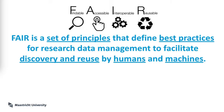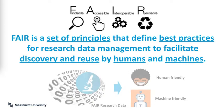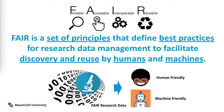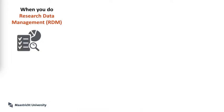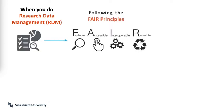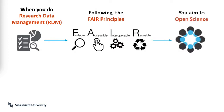But what is actually FAIR? Well, FAIR is a set of principles that define best practices for research data management to facilitate discovery and reuse by humans and machines. In other words, FAIR data is data that is human and machine friendly. Therefore, when you do research data management following the FAIR principles, you aim to open science.